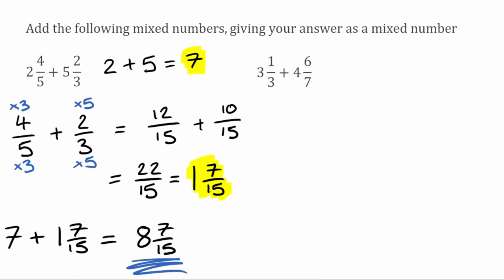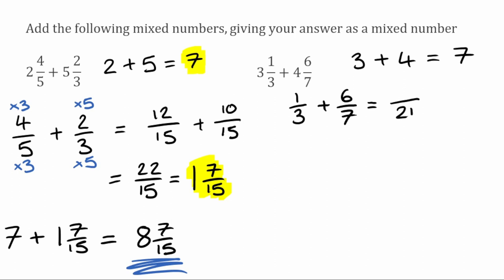For this next question, we've got three and one third, add four and six over seven. We're going to add the whole number parts first: three add four gives us seven. Then taking the fractions — a third and six over seven — we want a common denominator. The lowest common multiple of three and seven is twenty-one. So we're looking for equivalent fractions over twenty-one. For the three, we'd multiply by seven, so one times seven is seven — that gives us seven over twenty-one.